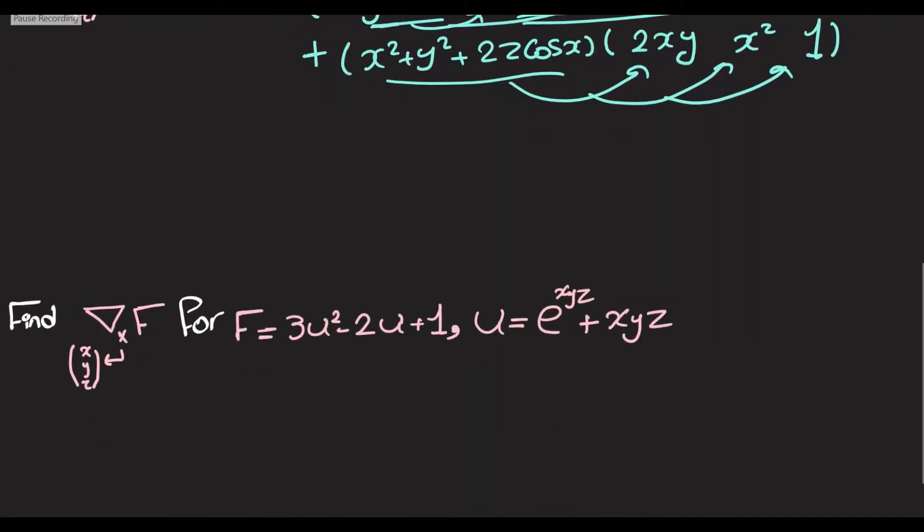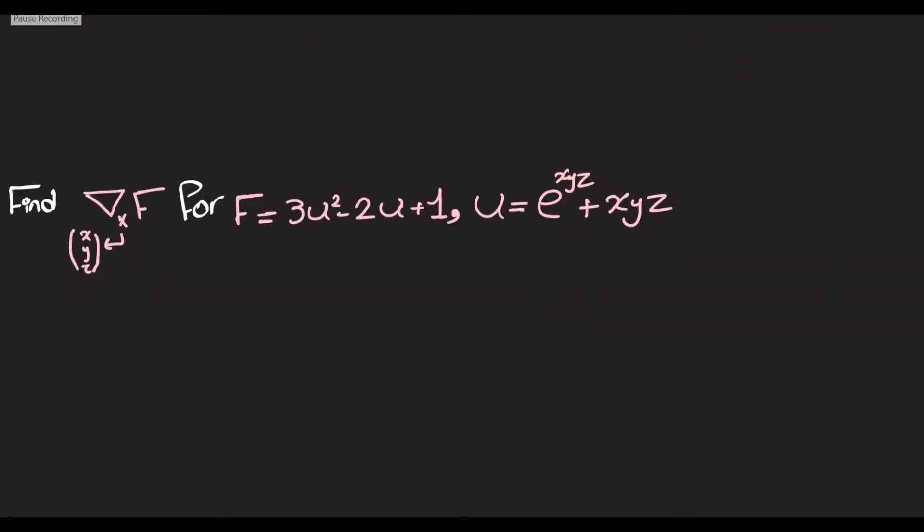Okay, and the chain rule is also somewhat the same. So we've got F = 3u² - 2u + 1, so F is a scalar function, and u = e^(xyz) + xyz. And we're trying to find the derivative of F with respect to the vector x. So what we're going to do here is use the chain rule. We're going to have ∂F/∂x, which is going to be 6u minus 2.